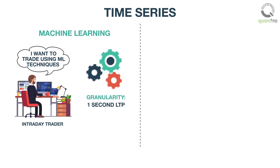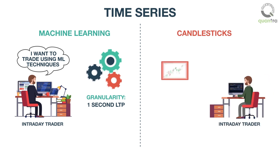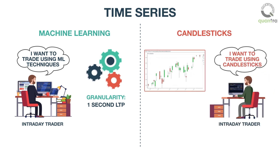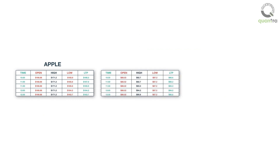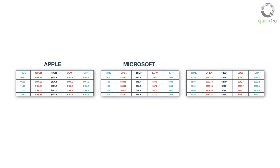However, if you are a Japanese candlestick trader, a 1 minute or a 5 minute OHLC data would be more suitable for successful analysis. There are also other ways in which financial data is collected.